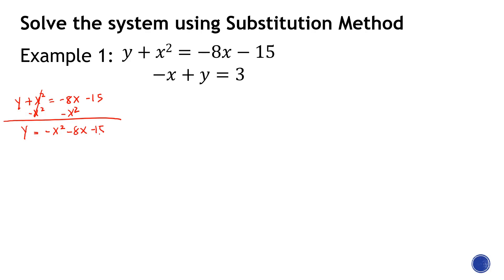That gives me y equals negative x-squared minus 8x minus 15. Now the linear equation is also not expressed in terms of y, so I will add x to both sides. That gives us y equals x plus 3. That's step one.